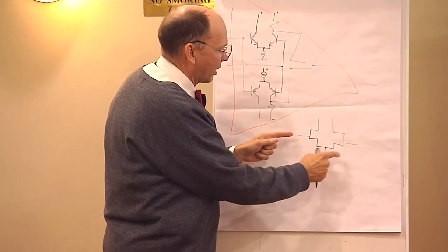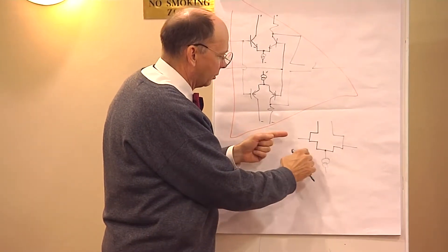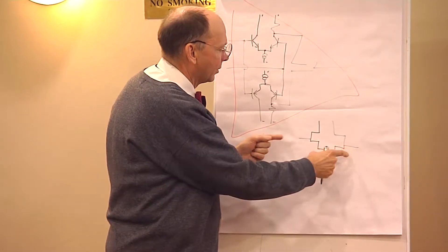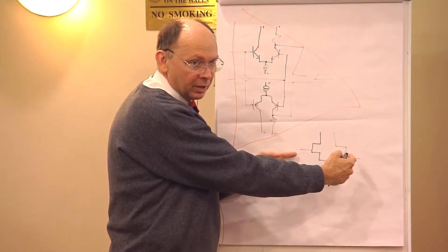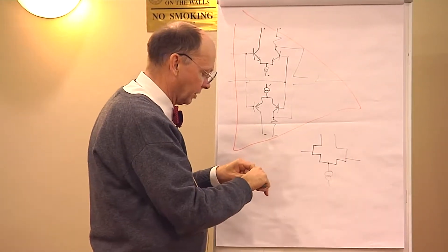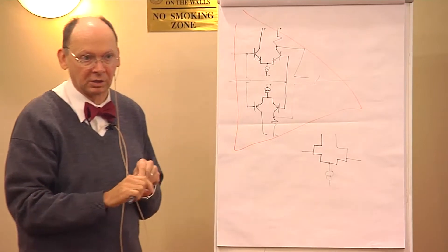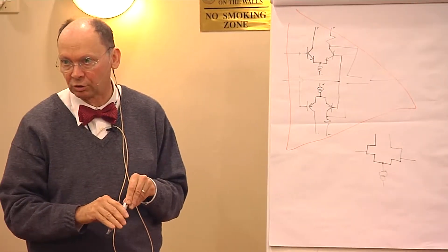Current noise density is actually a normal mode. It's current out of one and into the other and that current noise is read out to a voltage by the impedance between the two nodes. That's current noise density. That's usually the largest noise density you have, the current noise density contribution you have at an op amp.